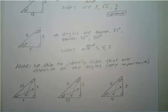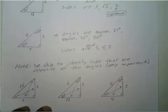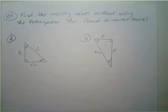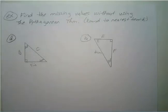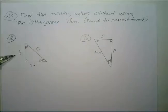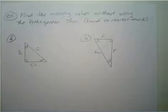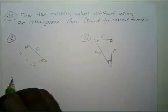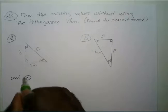If you're still writing, feel free to press pause. But we're going to go ahead and move on to our first set of examples. We want to find the missing values without using the Pythagorean theorem, and we round to the nearest tenth. You can't use the Pythagorean theorem here because you have two missing sides, but the special triangles will help out.